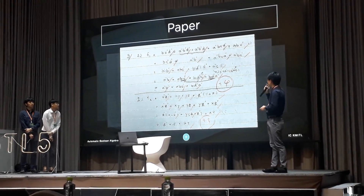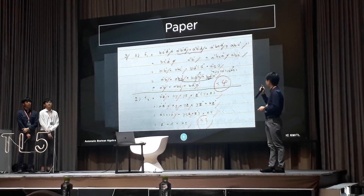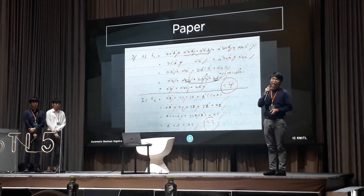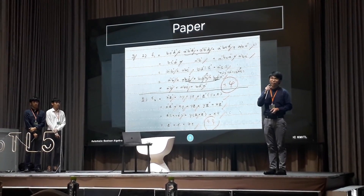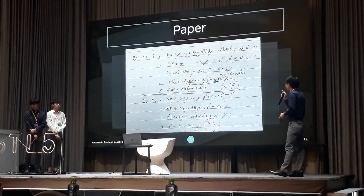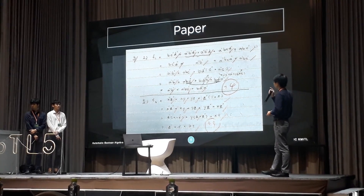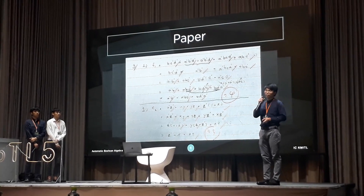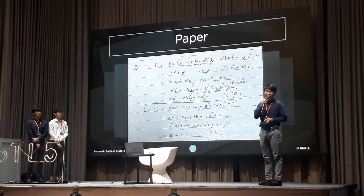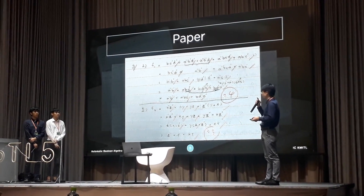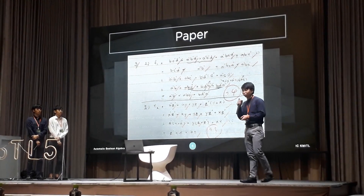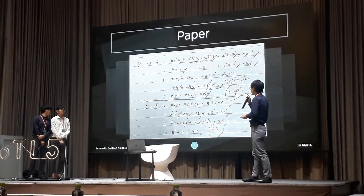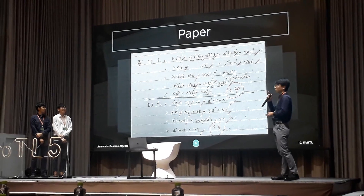The first problem of this research is the paper. Here is one example of a student's answer in Boolean algebra. You can see that the students have many different ways to write the answer. If the professor had to correct and evaluate all of the papers, it would be hard and require many efforts.